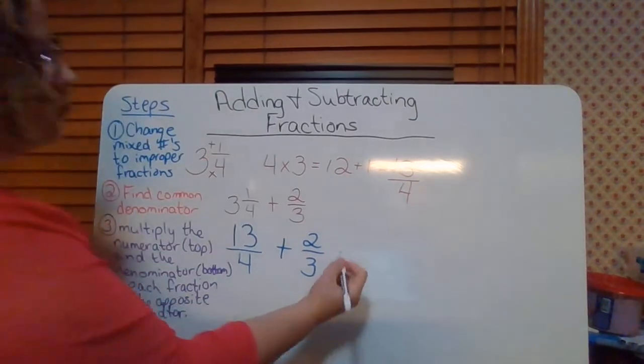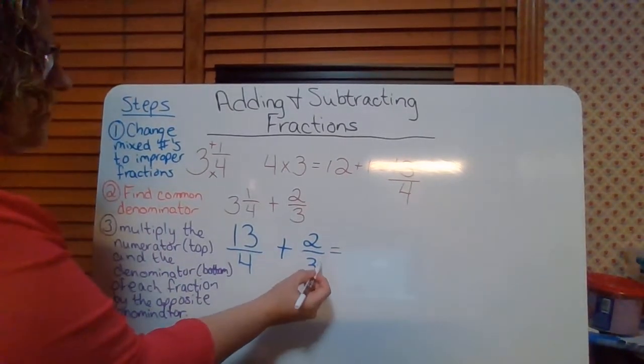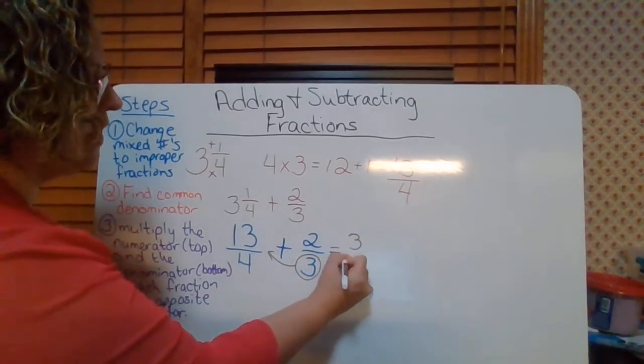So your third step is to multiply the numerator — which is your top — and the denominator — which is your bottom — of each fraction by the opposite denominator. So I'm going to multiply this fraction by this denominator, and I'm going to multiply this fraction by this denominator. That gives us three over three times 13 over four, plus two over three times four over four. For the first fraction, I multiplied by three because that was the opposite denominator; for the second, I multiplied by four.